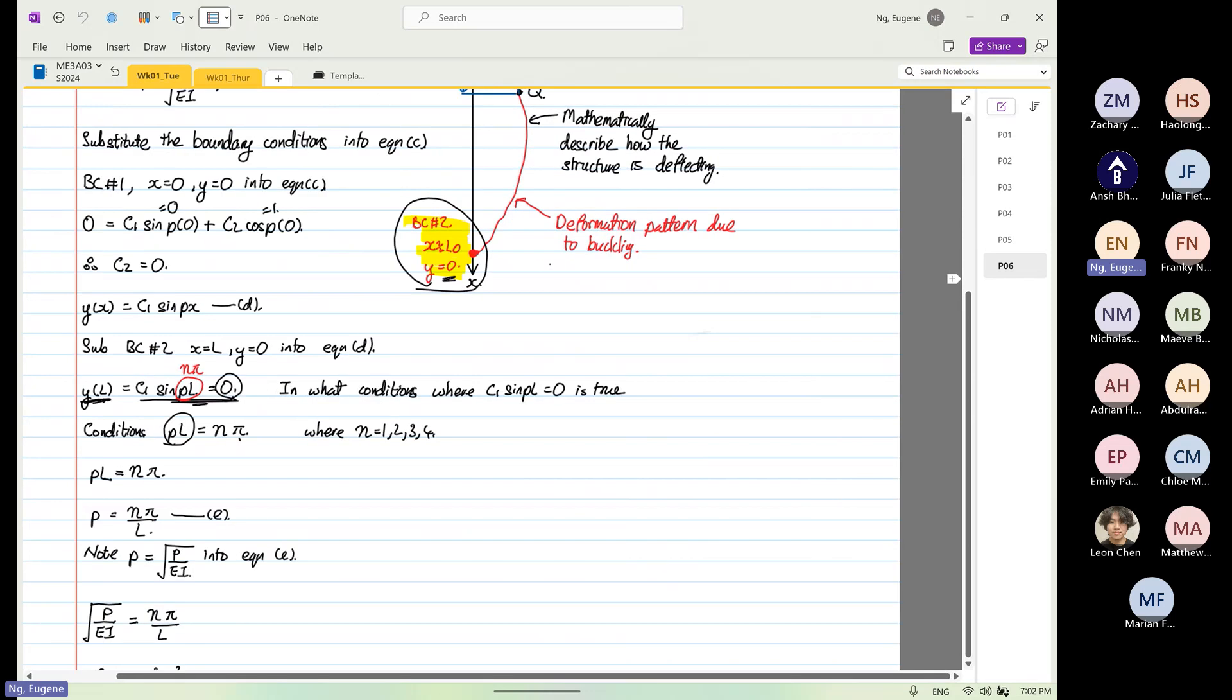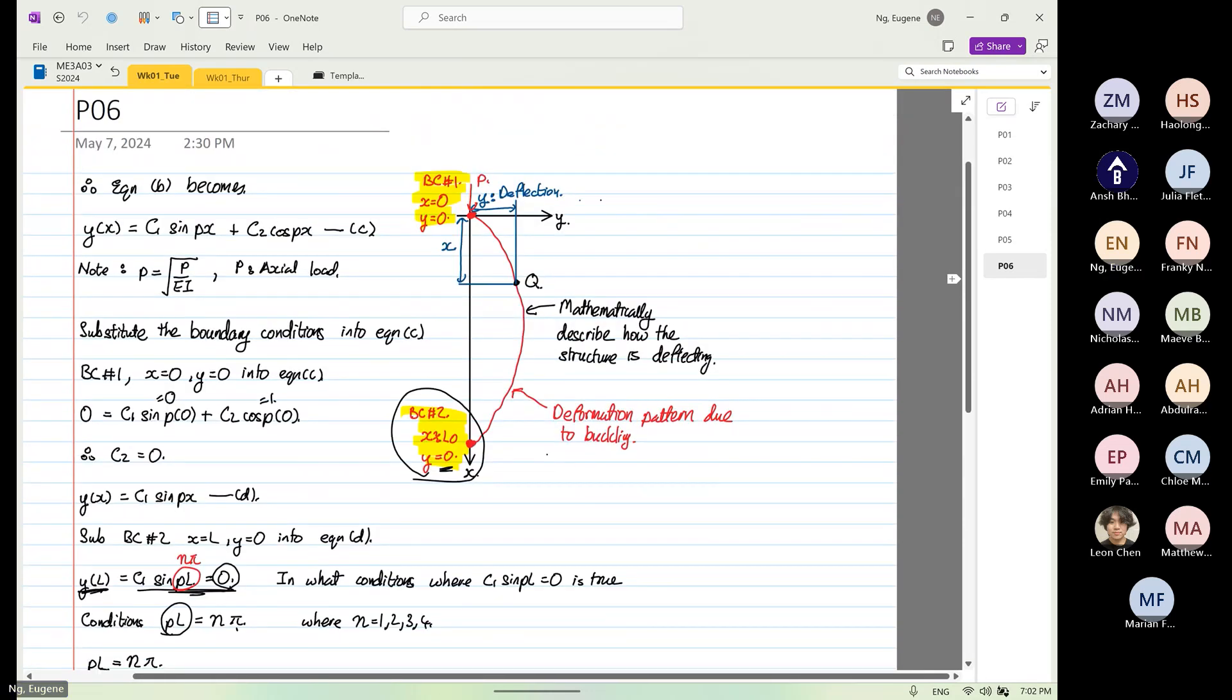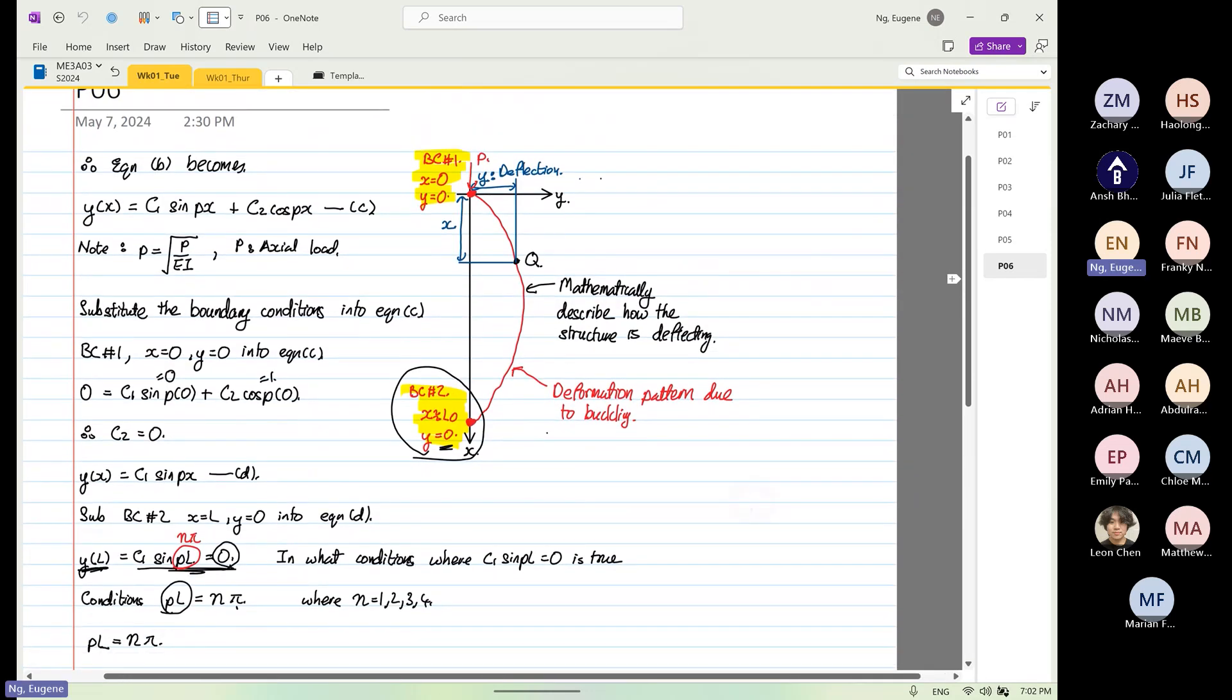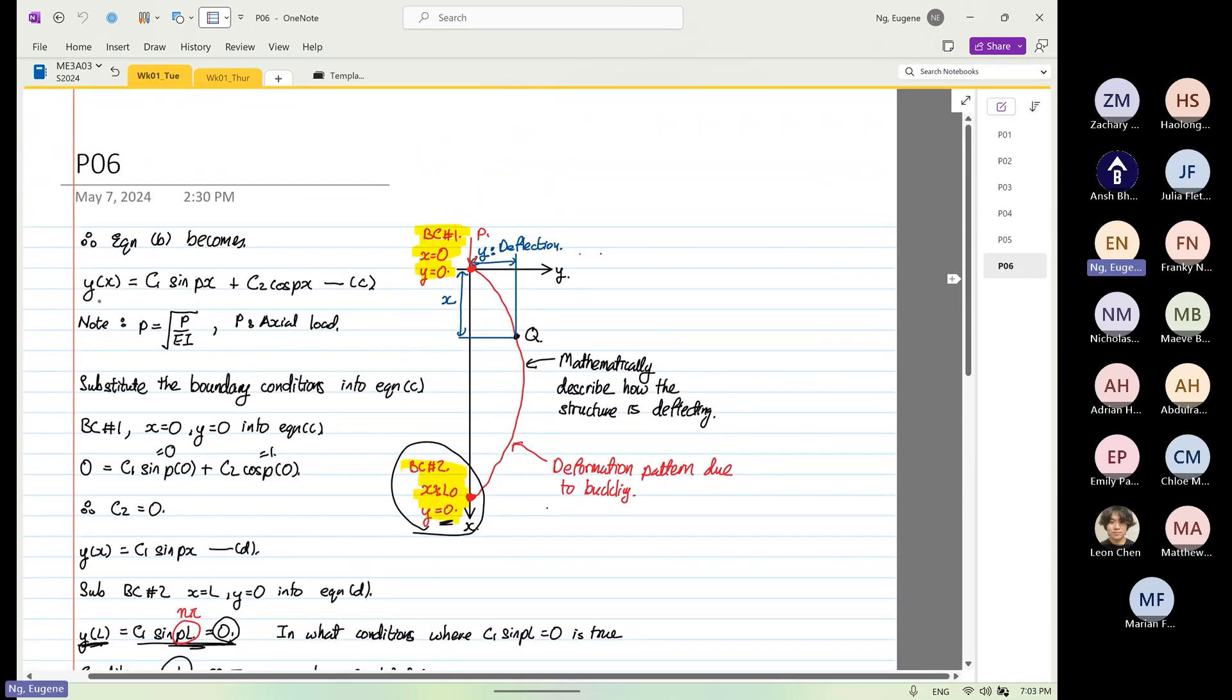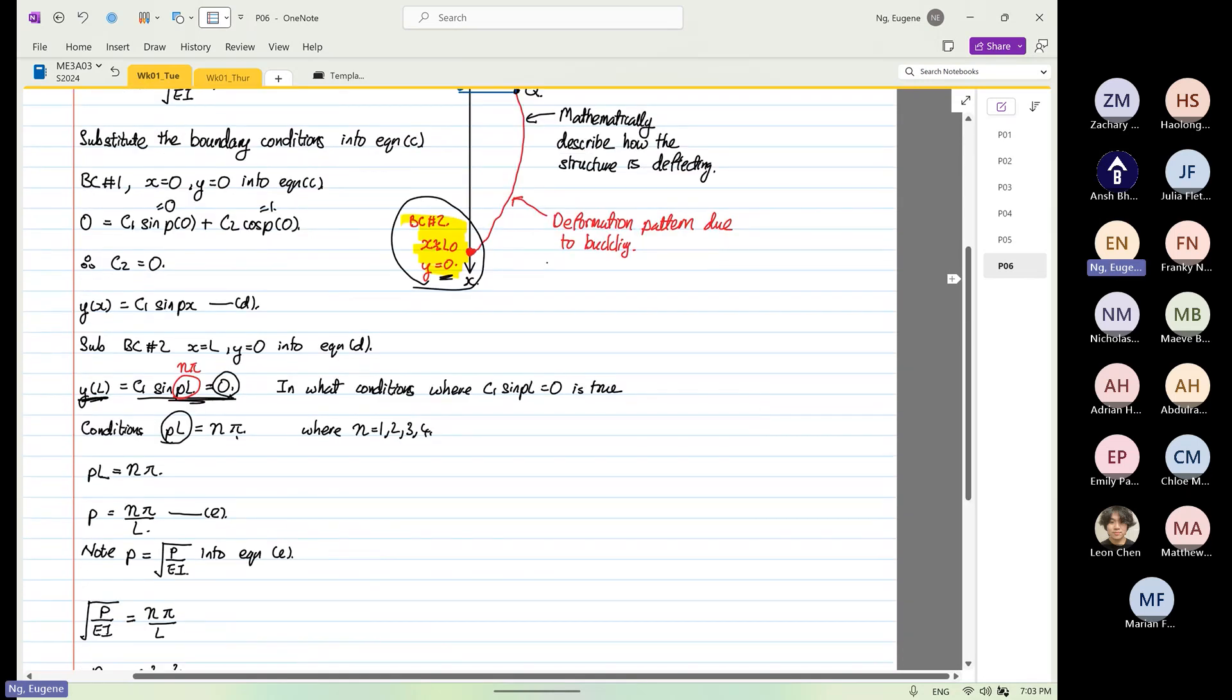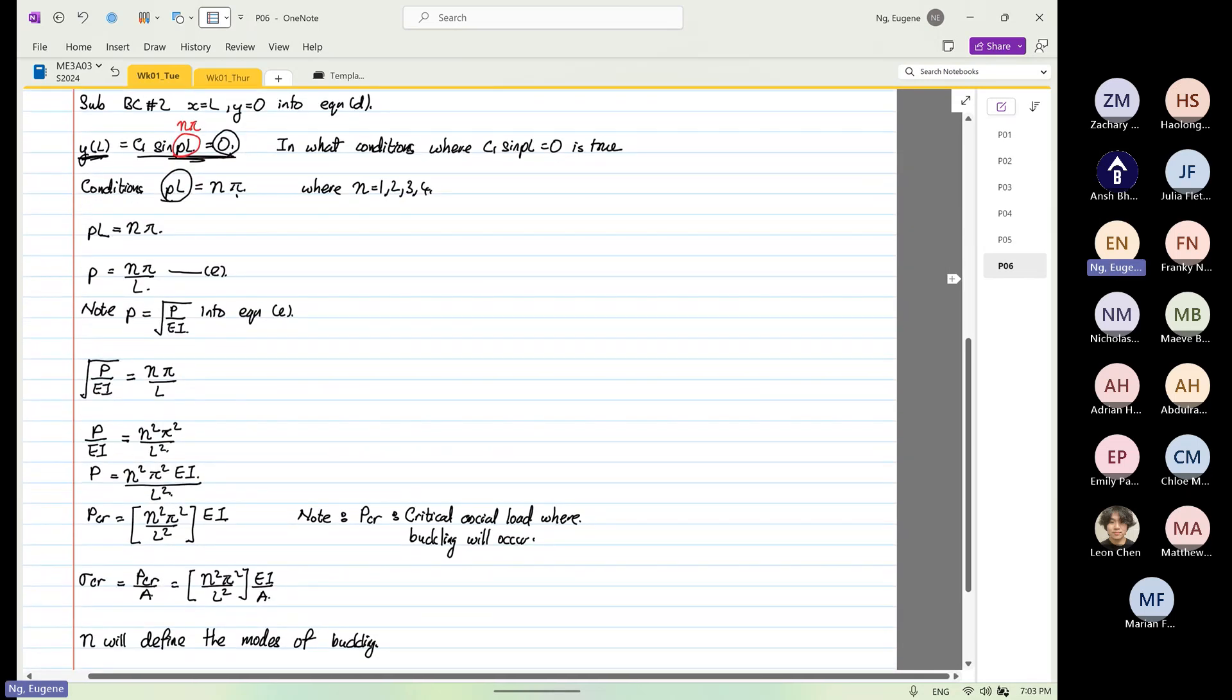As you can see over here, then we form an equation and we got a homogeneous second order differential equation. And then when we solve for it, what we want to find is y as a function of x. However, for this case, we realize that we cannot determine this value. However, we are able to dictate the condition based on critical load, which is more important.